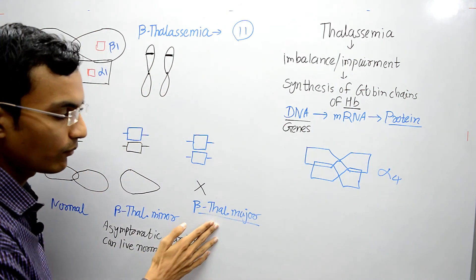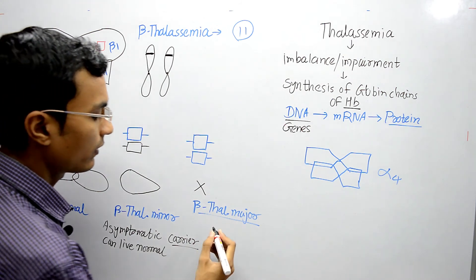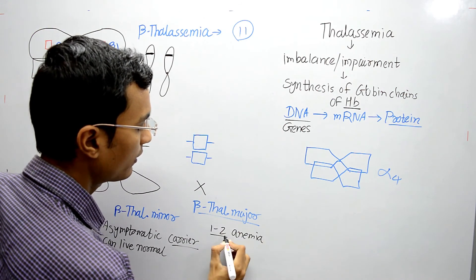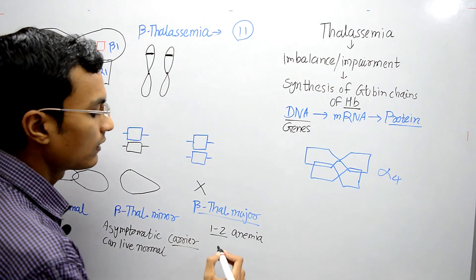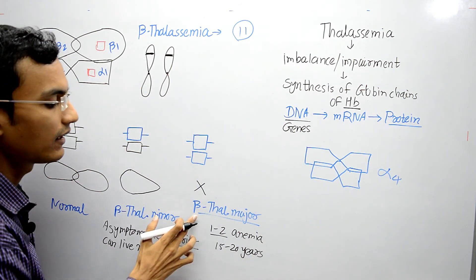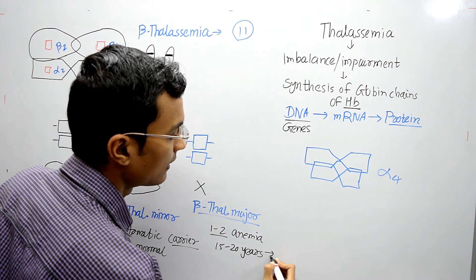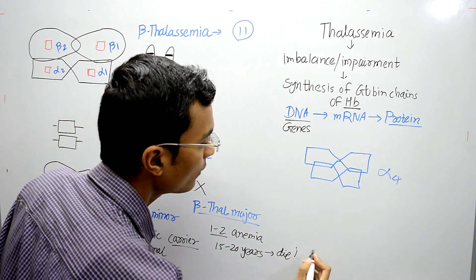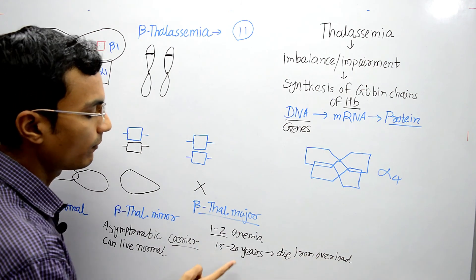Infants born with beta thalassemia major are healthy at the time of birth, but after one to two years they will die due to anemia. However, if frequent blood transfusion is done, the person can live up to 15 to 20 years. After 15 to 20 years, they will die due to iron overload from the hemoglobin in the blood transfusions.